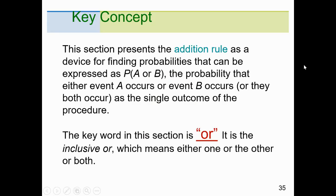This section presents the addition rule as a device for finding probabilities that can be expressed as the probability of A or B — the probability that either event A occurs or event B occurs, or perhaps they both occur at the same time as a single outcome. The key word in this section is 'or.'